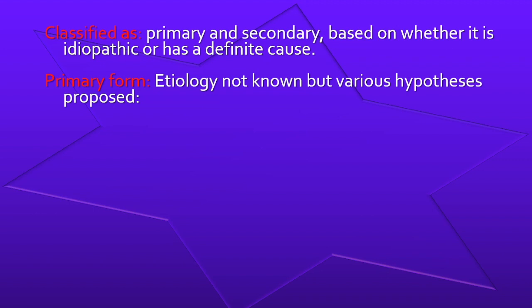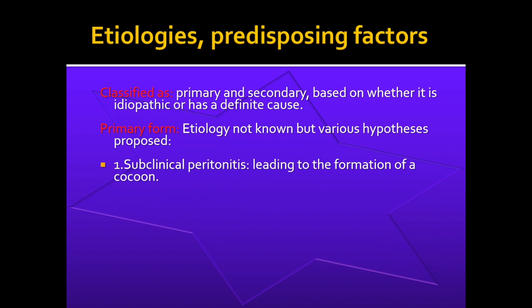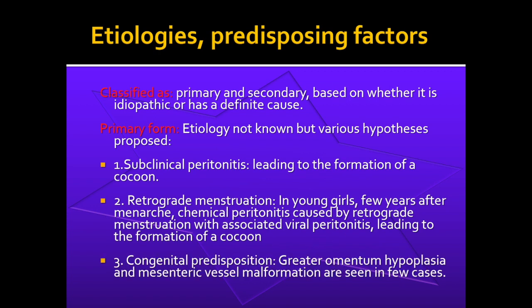Coming to the etiology, they are classified as either primary or secondary. In the primary form, etiology is not exactly known but various hypotheses are proposed. First is subclinical peritonitis, where the patient may have a non-florid form with no clinical presentation leading to cocoon formation. Another hypothesis is retrograde menstruation in young girls, which can incite chemical peritonitis associated with viral peritonitis. Some congenital predisposition is also suspected, with cases showing greater omentum hyperplasia and mesenteric vessel malformations.